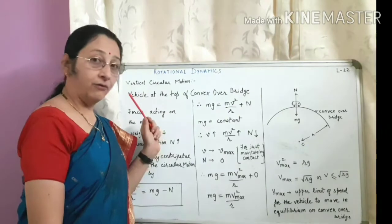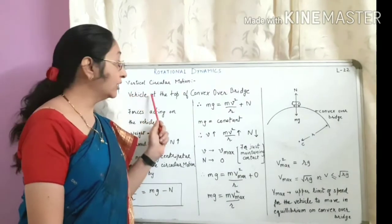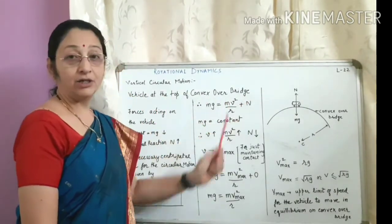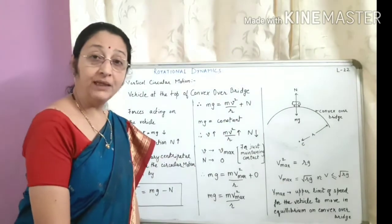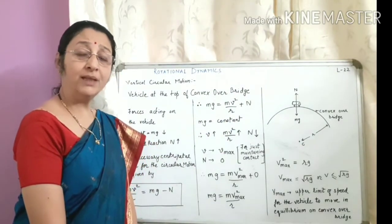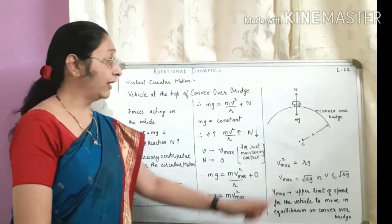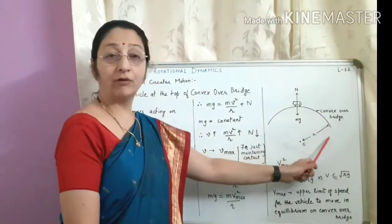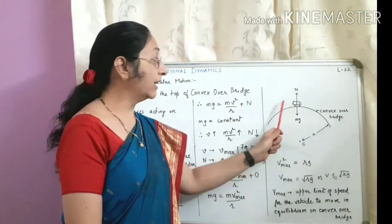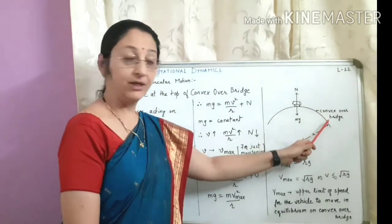Now we are going to discuss another application of non-uniform circular motion: a vehicle at the top of a convex overbridge, and what should be the maximum velocity of the vehicle. This is the convex overbridge and the vehicle is moving over it.